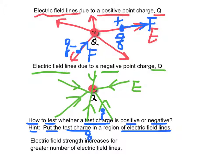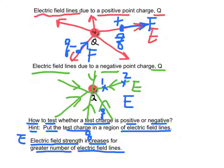Notice that electric field strength E increases with a greater number of electric field lines. That means at point 1 and point 2, since near point 1 there are more electric field lines than near point 2, we say the electric field strength at point 1 is greater than that at point 2.